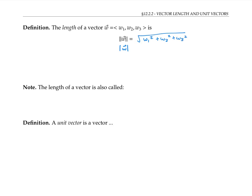This vector has three components, so it's a vector in 3D. If instead we had a vector in 2D, say with components v1, v2, then its length would be given by the square root of v1 squared plus v2 squared.